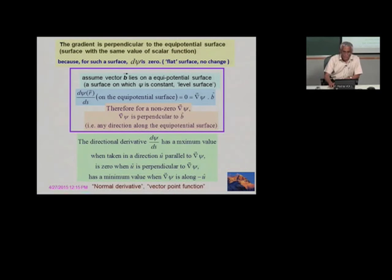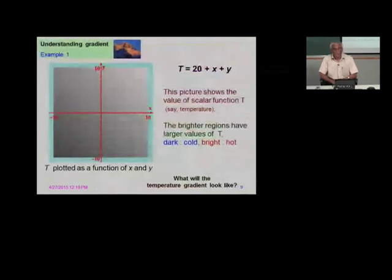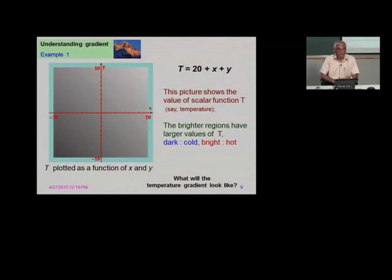To repeat: the directional derivative d-psi by ds has a maximum value when taken in a direction parallel to the gradient, and it is zero when taken in a perpendicular direction. It is a directional derivative — a derivative taken with a direction associated with it. Gradient is a vector point function.